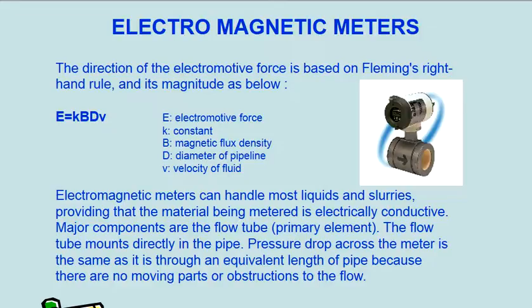K: constant. B: magnetic flux density. D: diameter of pipeline. V: velocity of fluid.